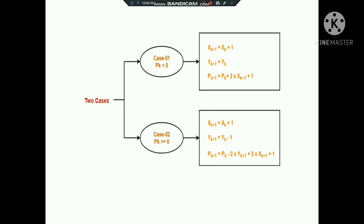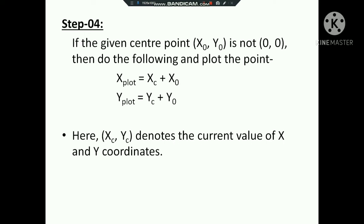This computes pk+1. If pk is greater than or equal to 0, then the next point is (xk+1, yk−1), and pk+1 = pk + 2*xk+1 + 1 − 2*yk+1. To summarize: if pk < 0, plot (xk+1, yk); if pk ≥ 0, plot (xk+1, yk−1).